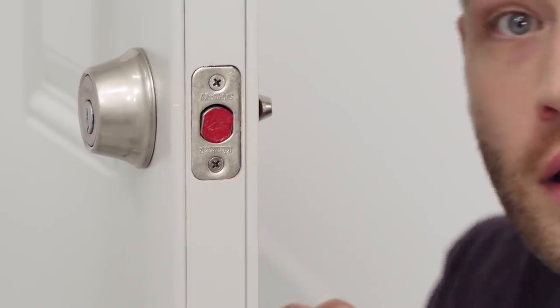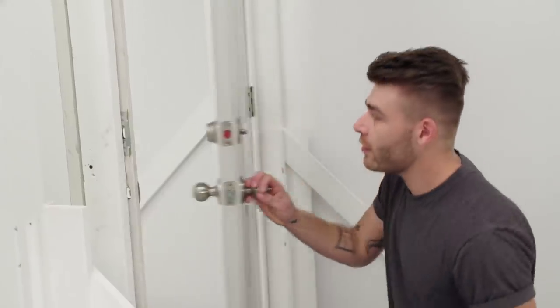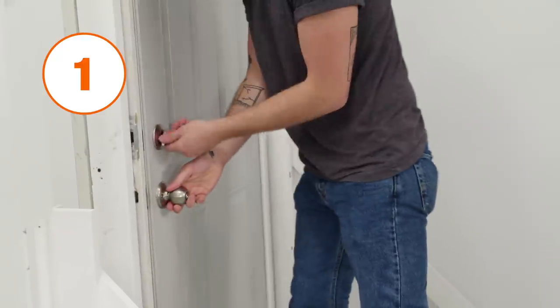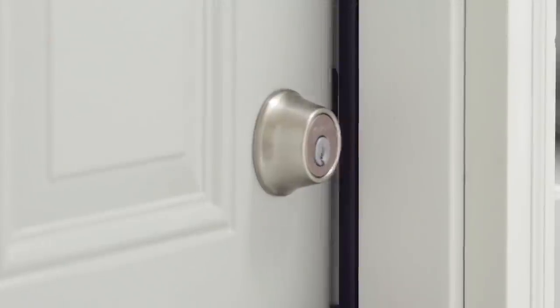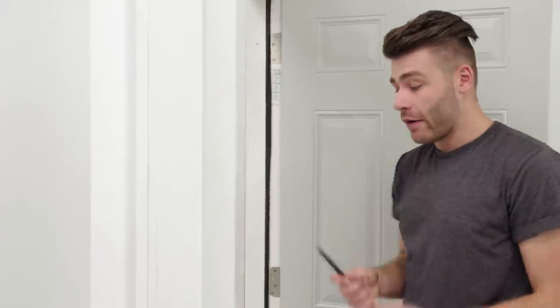Nailed it. Then we can close our door and the deadbolt and anywhere it's making contact with the strike plate, that lipstick will be transferred. Then we can grab a classic metal file and remove any material with that lipstick transferred onto it.